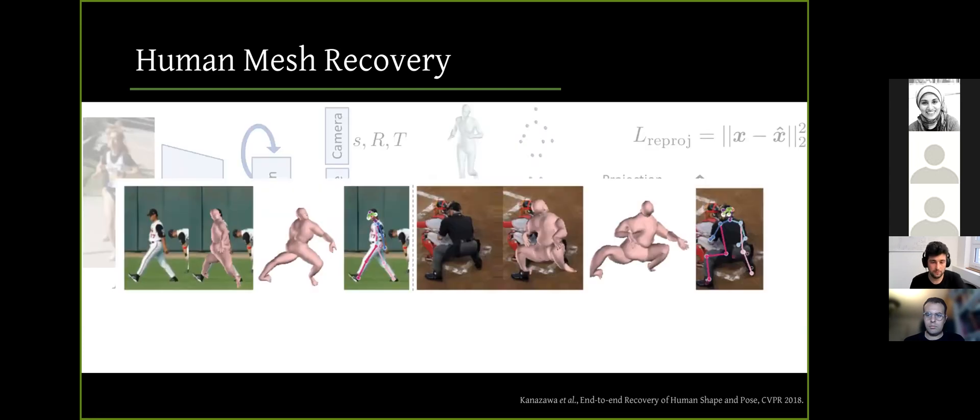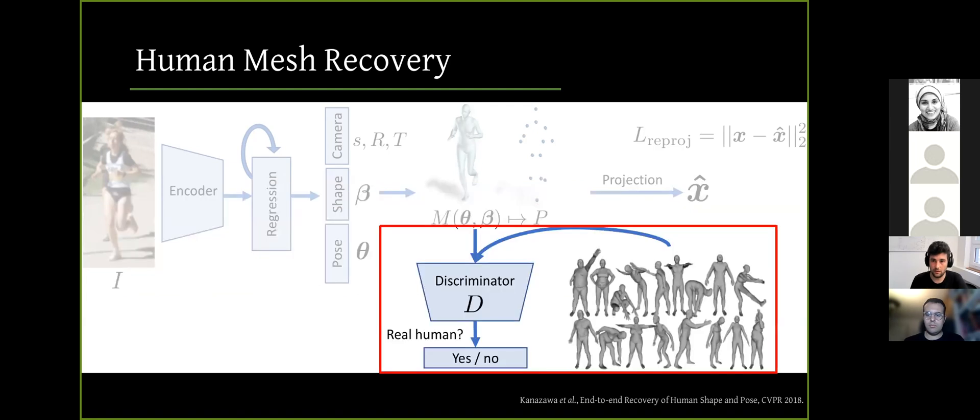However, this can result in implausible 3D bodies or bodies with this kind of gross self-intersections. And this still minimizes the reprojection loss I presented earlier. So to regularize this, they use a discriminator network that is trained to tell whether SMPL parameters correspond to a real body or not. And real body samples come from a large collection of SMPL bodies registered to real human scans and their plausible samples.